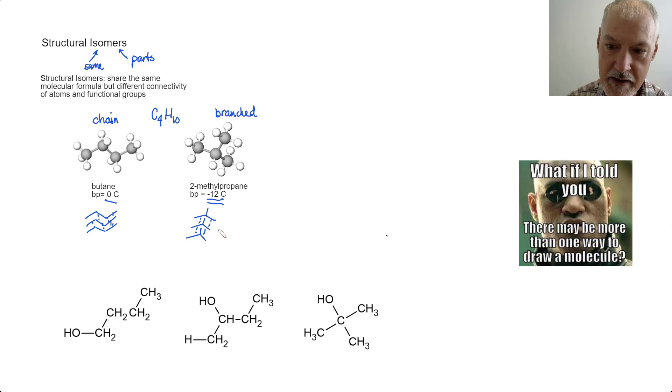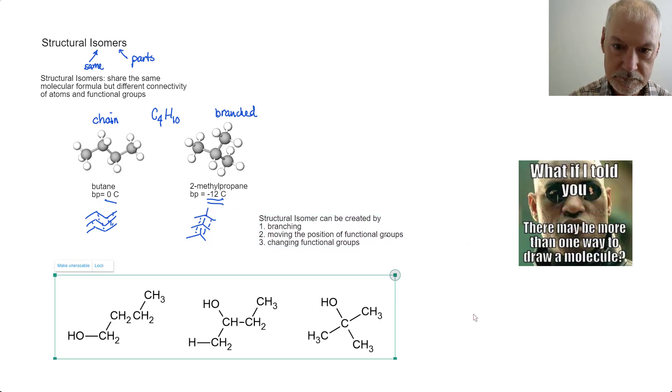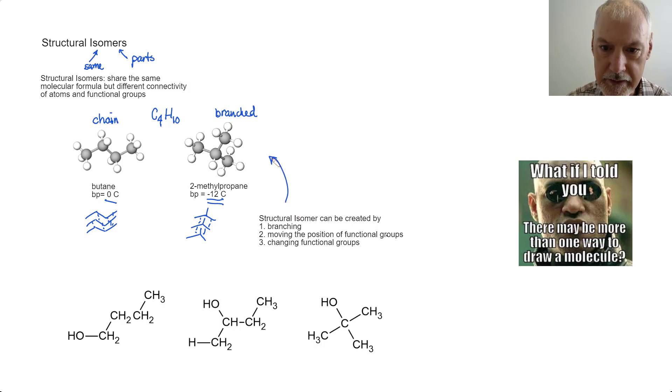There are several different ways by which we can create isomers. One technique is creating branching, and that has been illustrated in this particular example. I have a branch versus a straight chain, and you could have chains with multiple branches in them to create isomers.